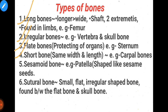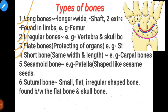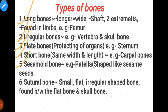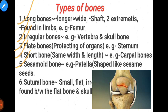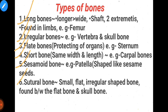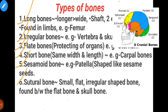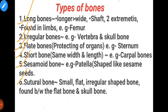Short bones: these are small in size, present at the wrist joints. Sesamoid bones: these are shaped like sesame seeds. An example is the patella (kneecap). Sutural bones: small, flat, irregular-shaped bones present between the flat bones of the skull.